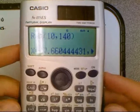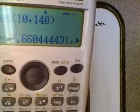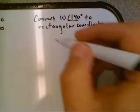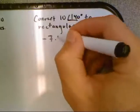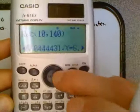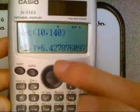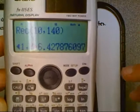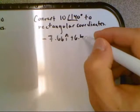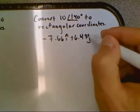I would give the answer then as negative 7.66i, and then we scroll over for the y or j coordinate, 6.43j.